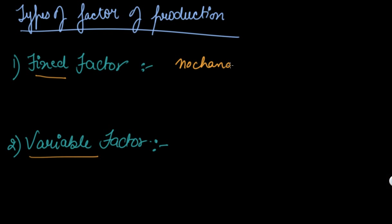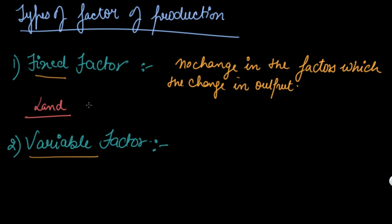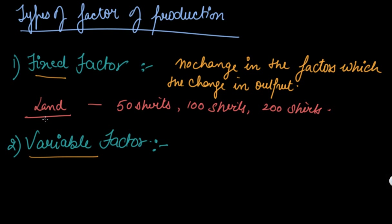Fixed factors are those factors the application of which does not change with the change in output. If there is any change in output, your fixed factor does not change. For example, land — your land will be the same whether you produce 50 shirts, 100 shirts, or 200 shirts. You have to pay the same rent. So this is your fixed factor.